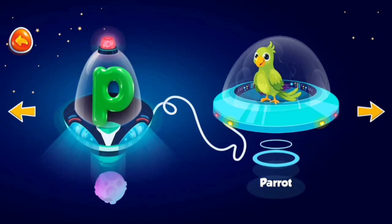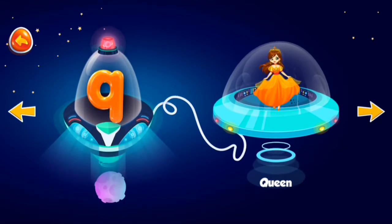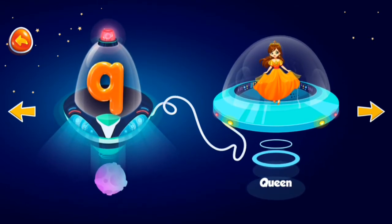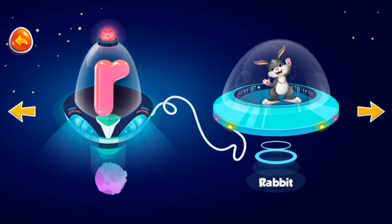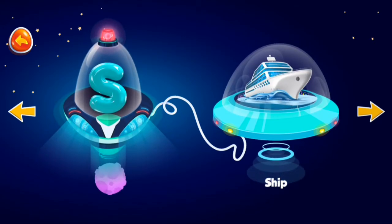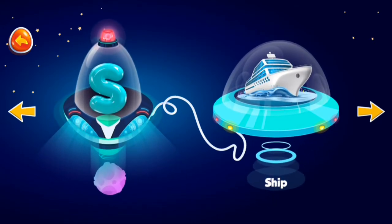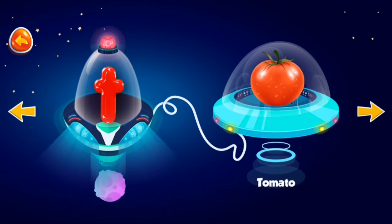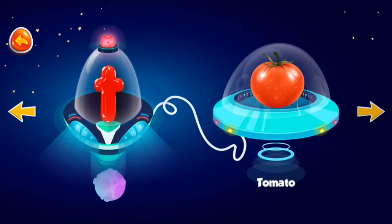P for parrot, Q for queen, R for rabbit, S for ship, T for tomato.